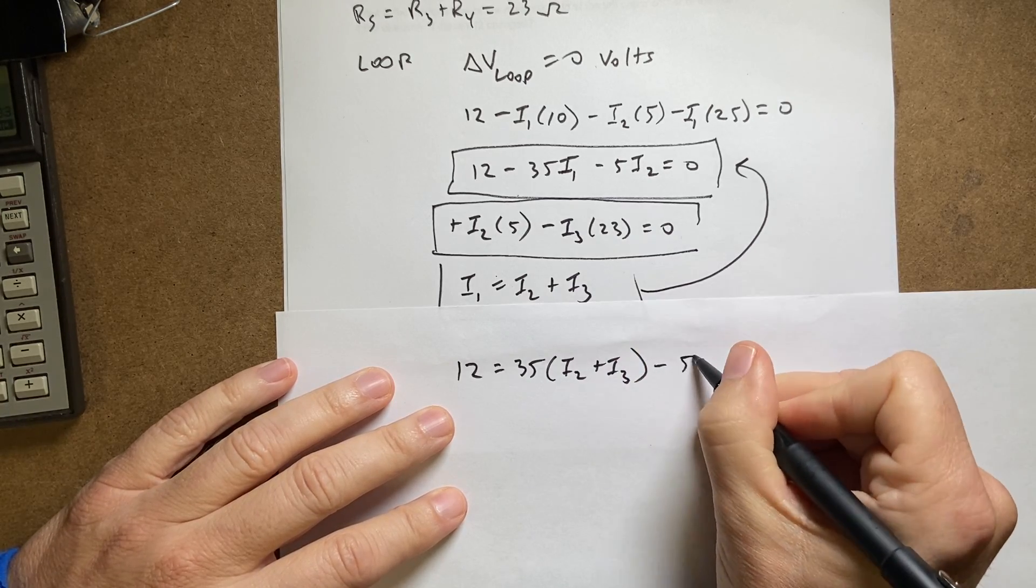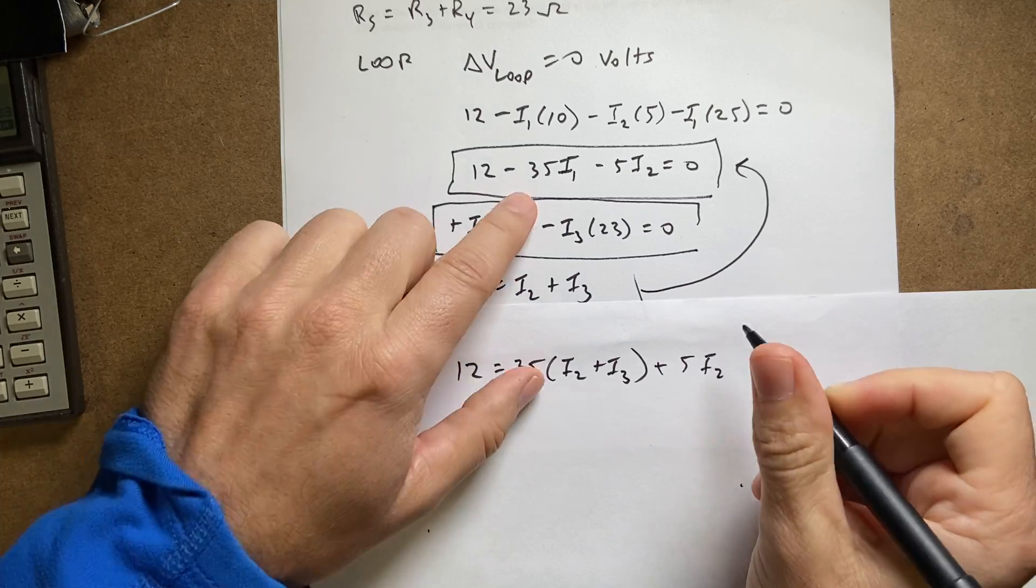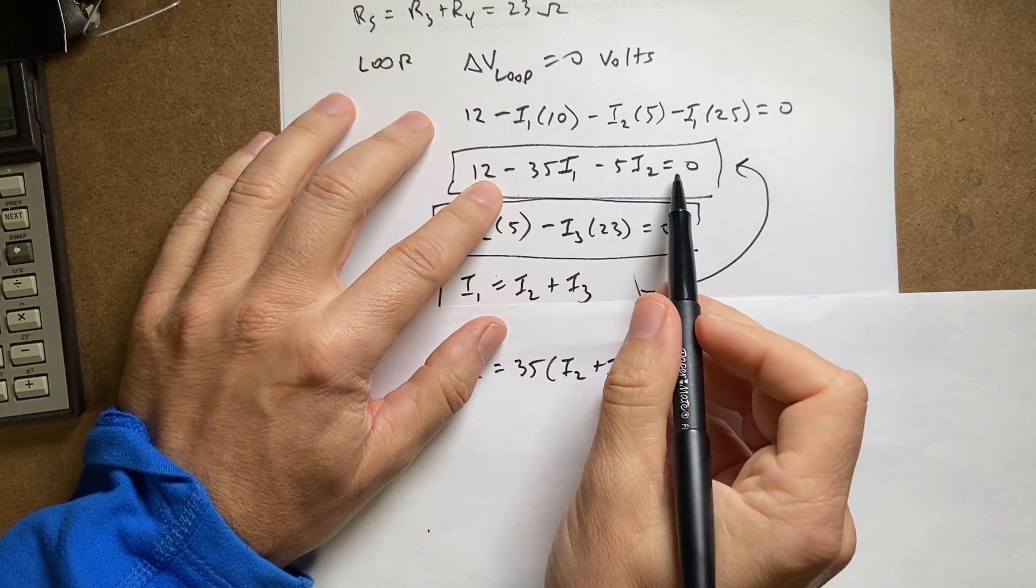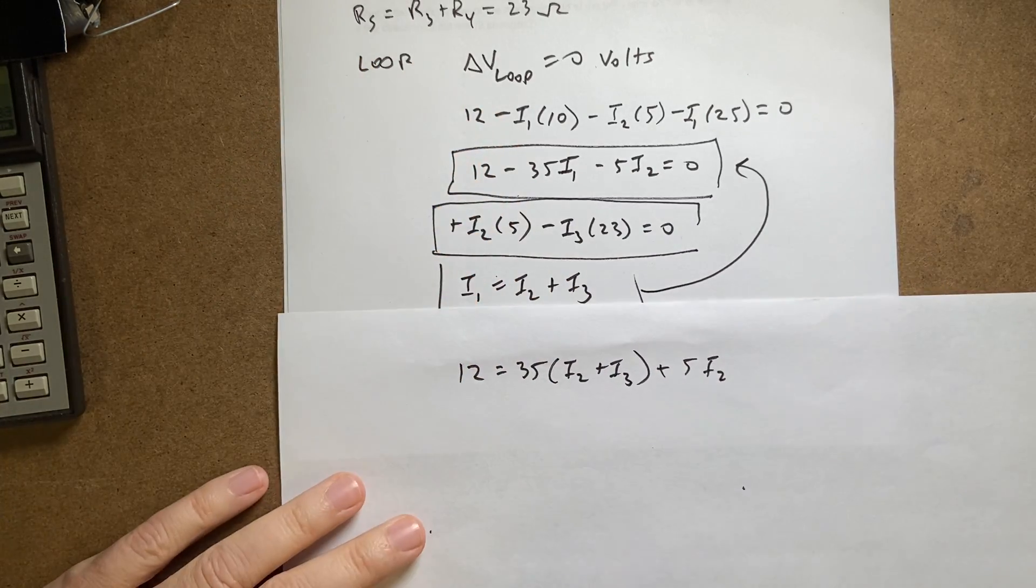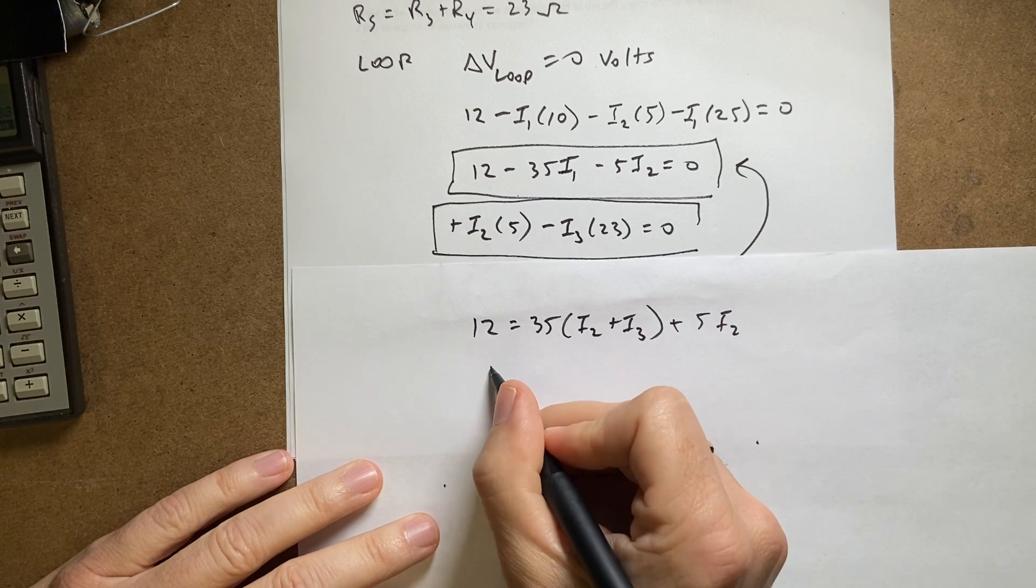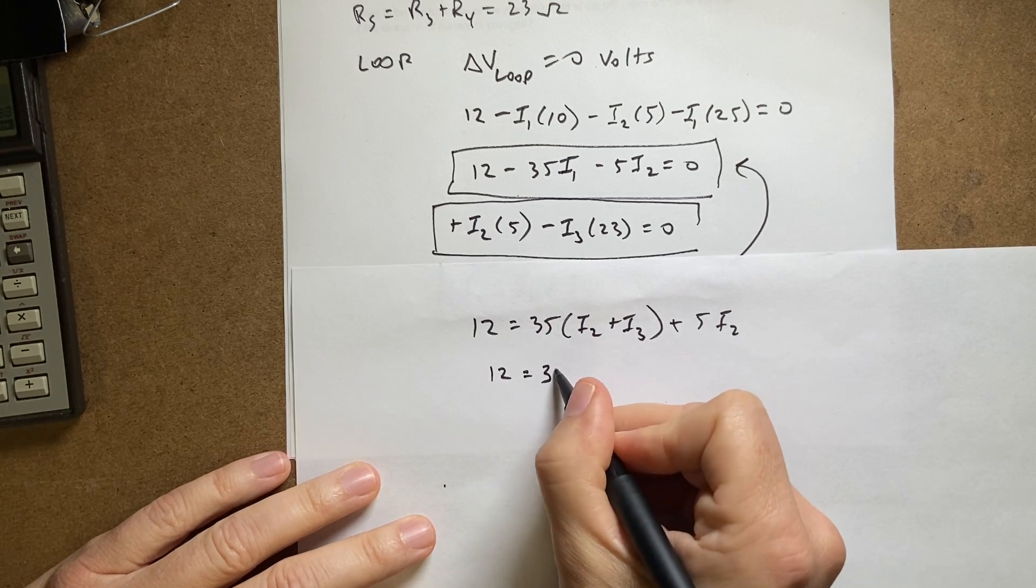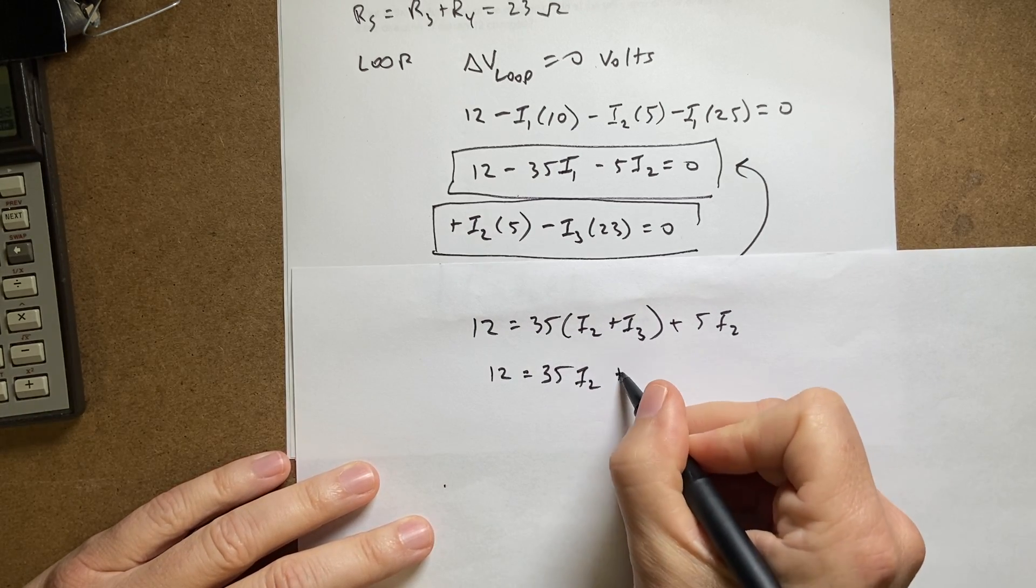Minus five—oh no, it's plus five i2. So I moved these two to the other side and they became positive, so everything's positive right there.